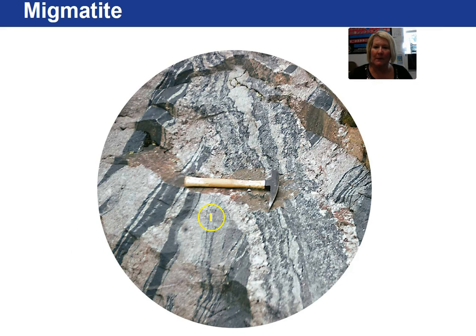Here's a picture of migmatite — part igneous and part metamorphic. The white layers are igneous and the dark layers are metamorphic.